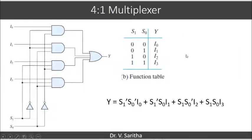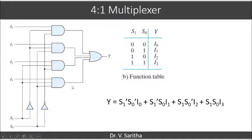We can observe a similarity between the multiplexer and the decoder. If we remove i₀, i₁, i₂, i₃ and the OR gate, and consider the outputs of the 4 AND gates as d₀, d₁, d₂, d₃, then it is nothing but a decoder. So a 2×4 decoder is a part of a 4×1 multiplexer. In general, a decoder is a part of a multiplexer.